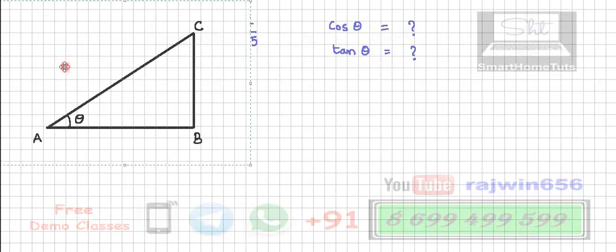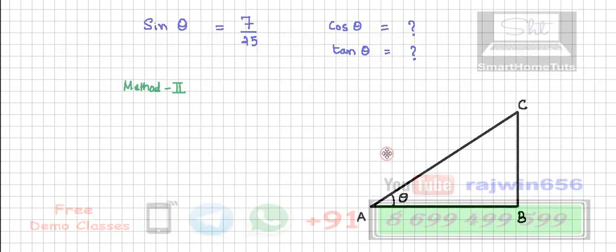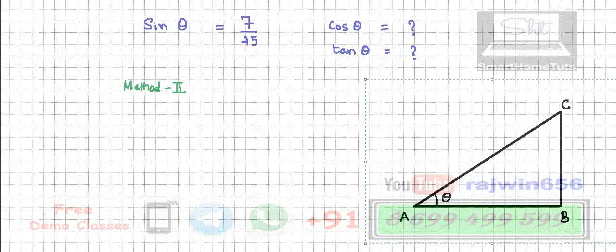So I am going to draw this triangle. This is the triangle that is there, triangle ABC. So sine theta is taken as theta, and the value of sine theta is 7 upon 25.